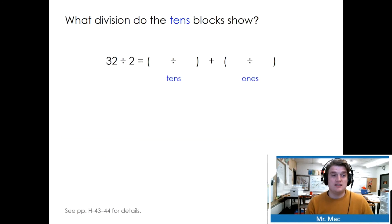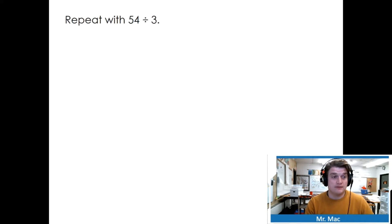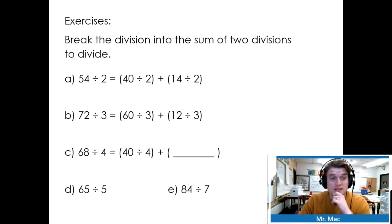What division do the tens blocks show? The tens blocks show 30 divided by 2. The ones blocks show 2 divided by 2. 54 divided by 3 shows 50 divided by 3 and 4 divided by 3. Can I divide 4 equally with 3? I can't.